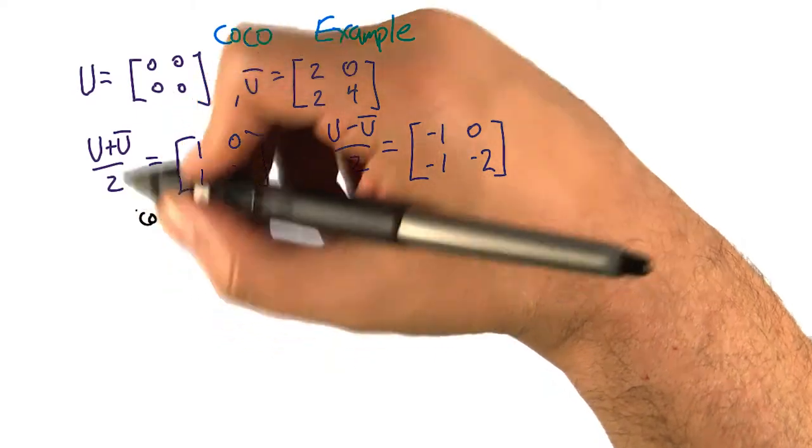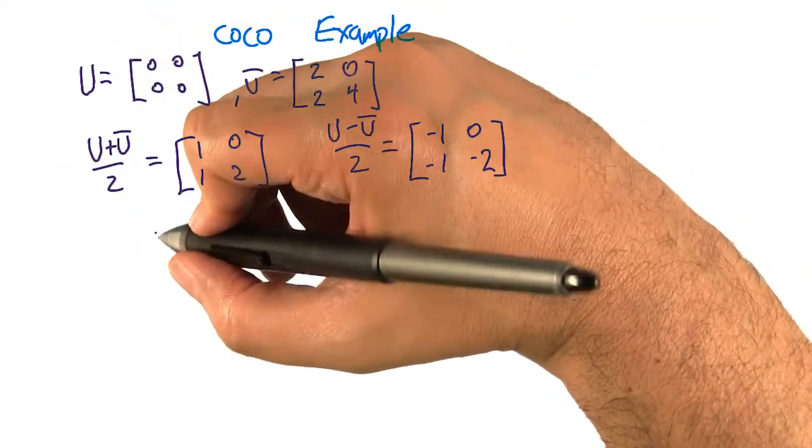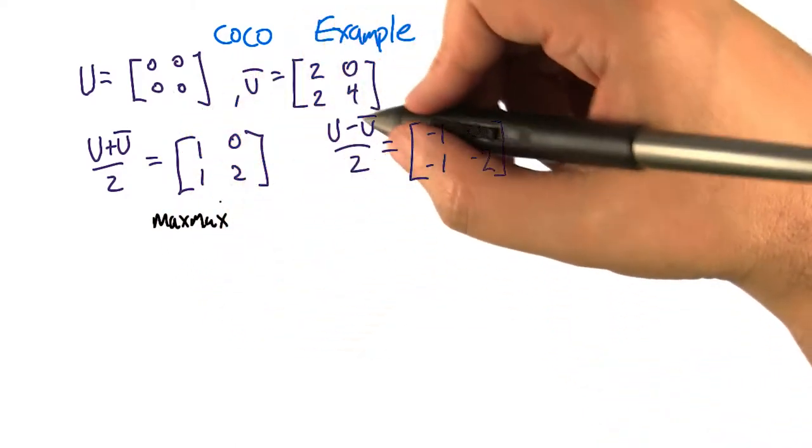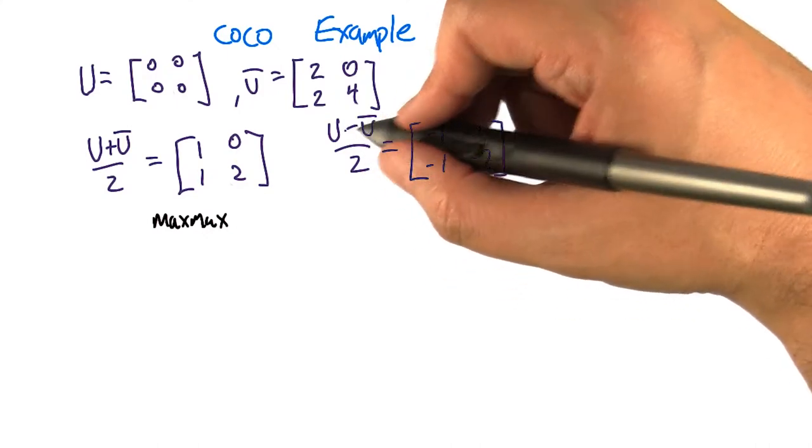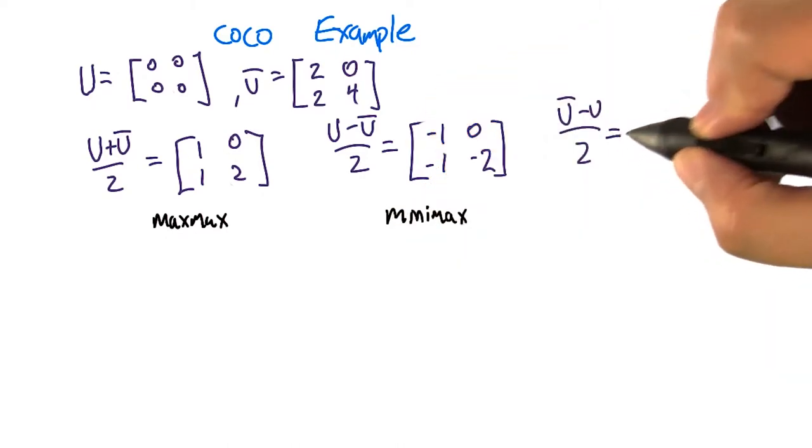So that gives us the purely cooperative game, which is the average of the payoffs for the two players, which we're going to compute the value of using MaxiMax. And the purely competitive game from the perspective of the U player. So U minus U bar over two, which looks like this.